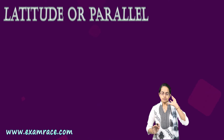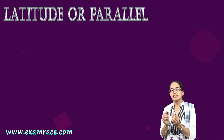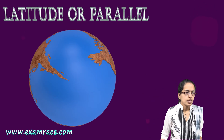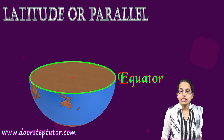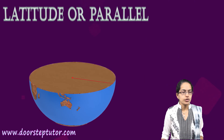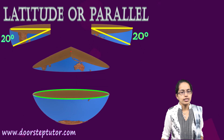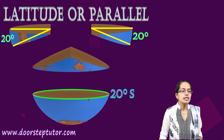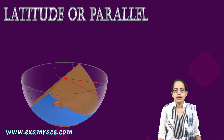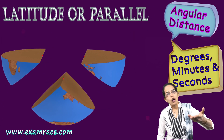Let's first talk about latitude. Latitude, which is also known as a parallel, is the angular distance from the center of the earth. So if you have the equator and you want to understand 20 degrees south, you draw a 20-degree angle and draw another line — that would be the 20-degree south line. Similarly you can draw 20 degrees north and so on. It is an angular distance understood in degrees, minutes, or seconds north and south of the equator.